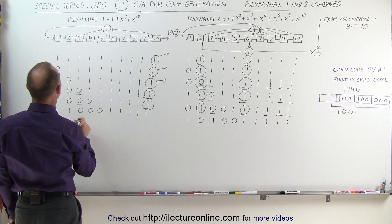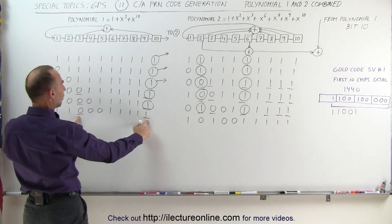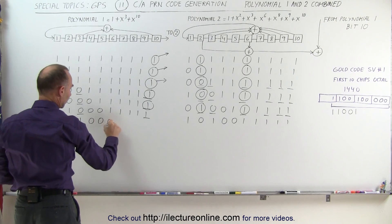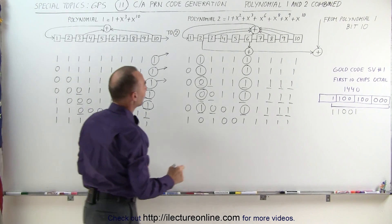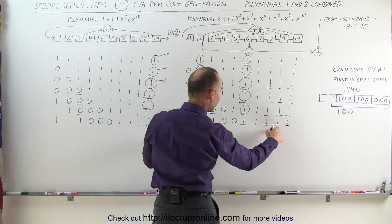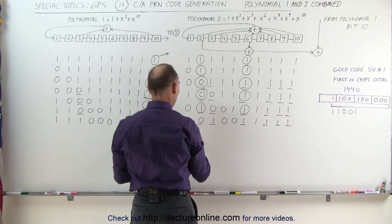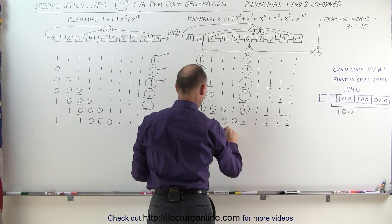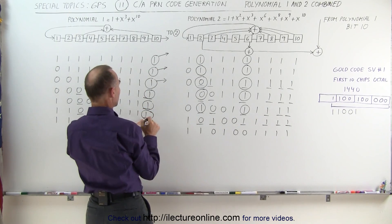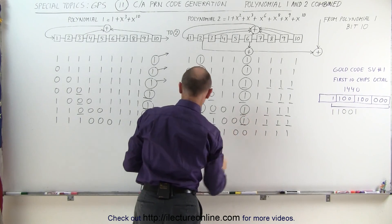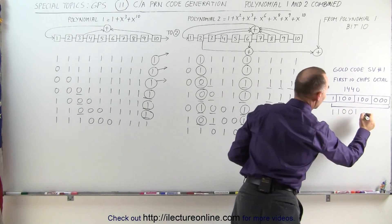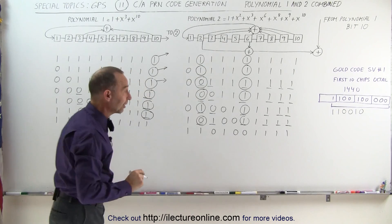Next step: we combine 3 and 10 — 0 and 1 is 1 — that goes into the first bit position, everything else shifts over. We add bits 2, 3, 6, 8, 9, and 10 — that's 5 ones, odd, becomes a 1, goes in, everything else shifts. We grab the 10th bit position, the 2nd position, and the 6th position: 1 plus 0 plus 1 is 2, which is even, that becomes a 0. That's the next chip on the code going out. So far it looks like we've got the right code.